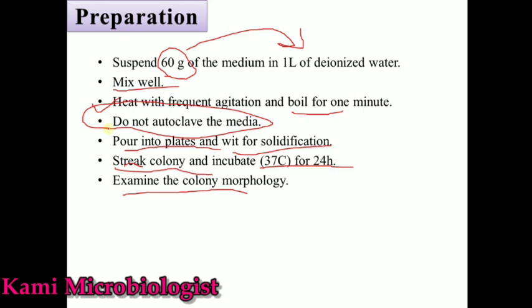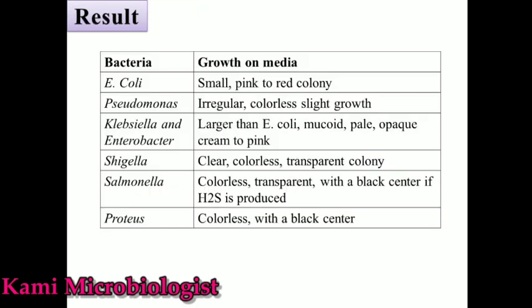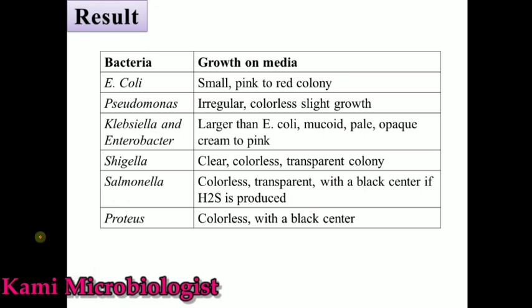Different types of bacteria grow on this media. This media is selective for Shigella and Salmonella, but it is also differential because it can distinguish lactose fermented and non-lactose fermented bacteria. E. coli, a lactose fermenter, produces small pink to red colonies. Pseudomonas, a non-lactose fermenter, produces irregular colorless light growth. Klebsiella and Enterobacter are lactose fermenters that produce mucoid, pale opaque, creamy pink colonies slightly larger than E. coli colonies.